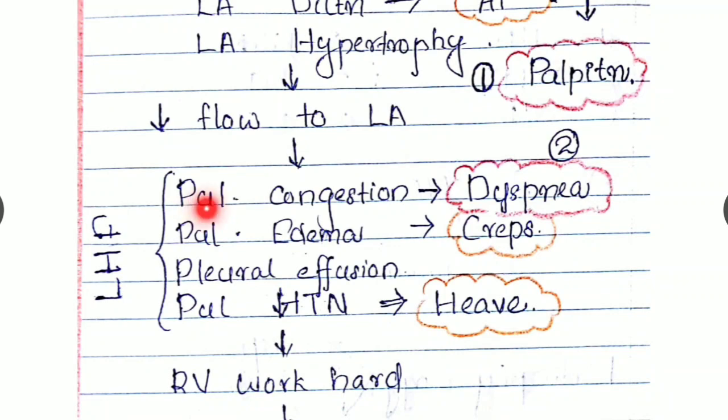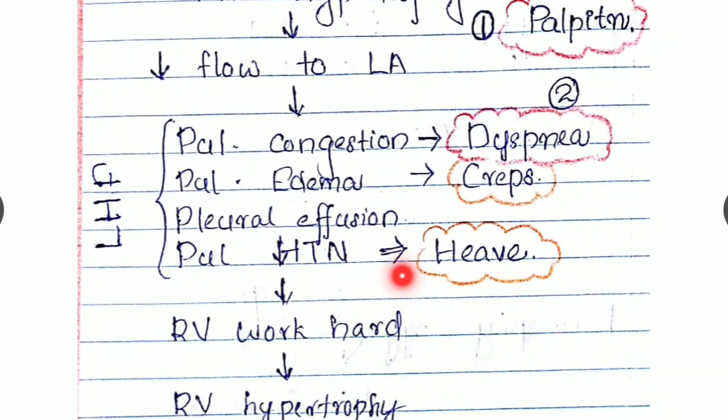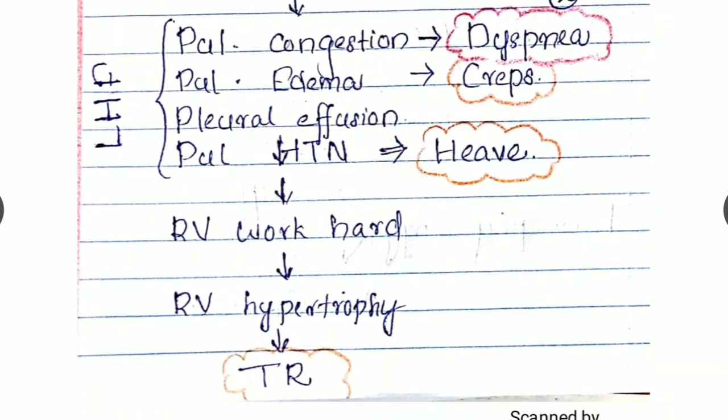As a result of this, pulmonary congestion, pulmonary edema, pleural effusion, and finally pulmonary hypertension can occur. So our right ventricle has to work hard because of this pulmonary hypertension. As a result of that, the right ventricle will get hypertrophied.